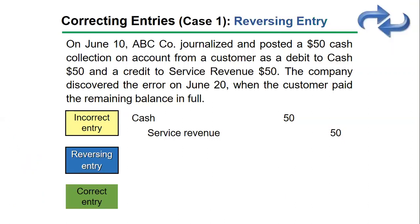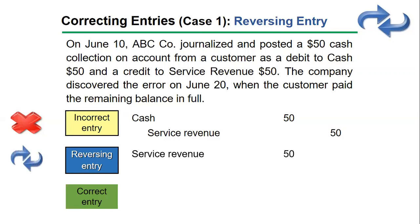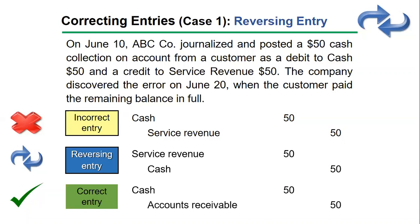Now, using the same case but with the reversing entry method — which is easier — first we reverse the whole incorrect entry, meaning cash will be credit and service revenue will be debit. This eliminates the whole effect of the incorrect entry. The second step is to journalize and record the correct entry: cash debit $50 and accounts receivable credit $50.